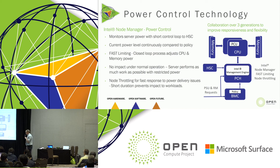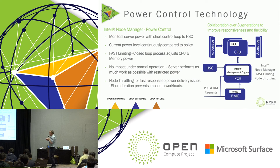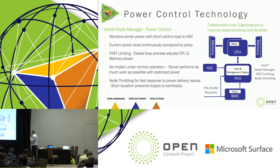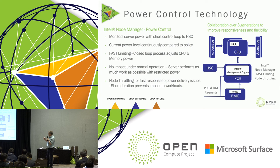Another thing we have to handle is unexpected rises in application load or some kind of power event where you need to very quickly throttle the CPUs or the whole node to respond. That's where requests come in directly from power supplies or the rack manager. Intel Node Manager will work with the CPUs to, in just a few milliseconds, drop power quickly and ramp up to a new default power cap at a lower level than the previous cap. A lot of effort is put in to make sure this is done in a smooth and incremental method that does not impact applications.